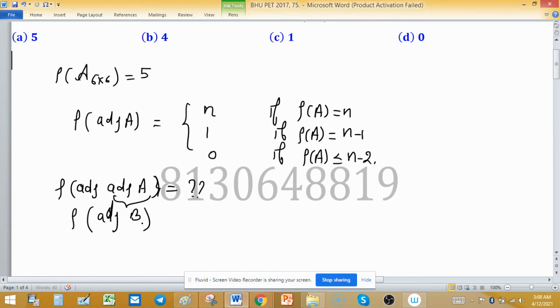For this, we have to find rank of B. What is B? B is adjoint A, so we need to find rank of adjoint A. Rank of A is 5. 5 can be written as 6-1, which is n-1. This property is followed, so rank of this...